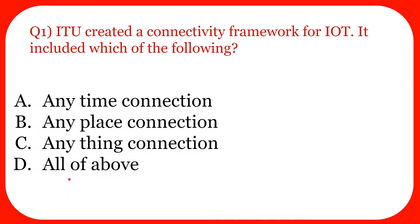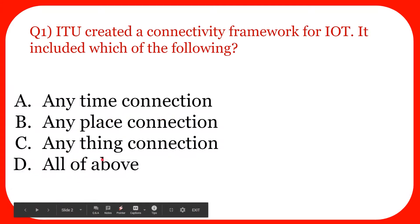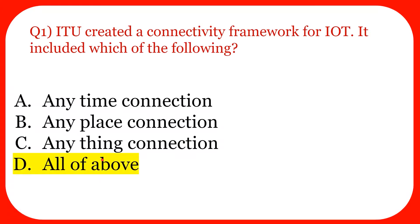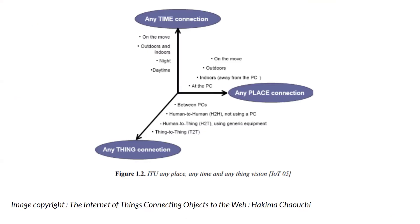The first question: ITU created a connectivity framework for IoT — it included which of the following? When the concept of IoT started, ITU came up with a network framework. The options are: anytime connection, anyplace connection, and anything connection. The answer is option D — all three. This was the concept created by ITU: wherever IoT is present, we will be able to have a connection whenever we want, wherever we want, and connect anything we want.